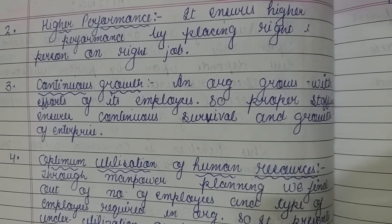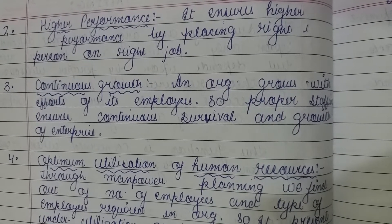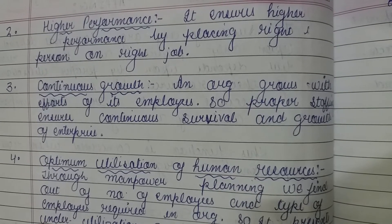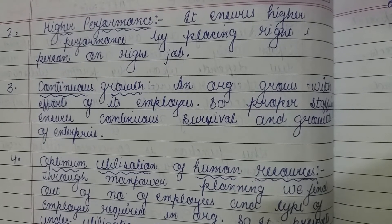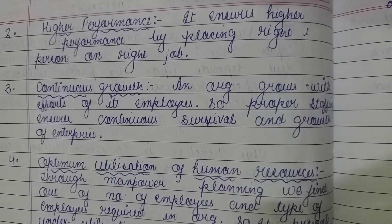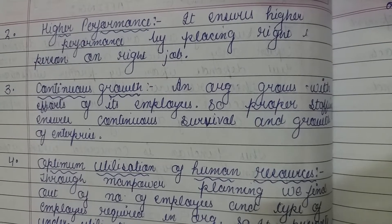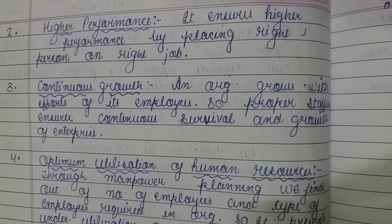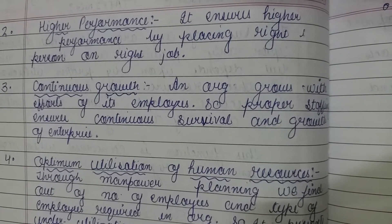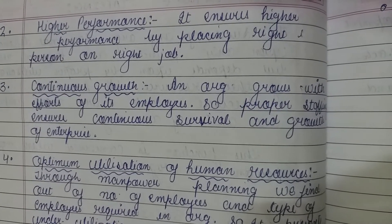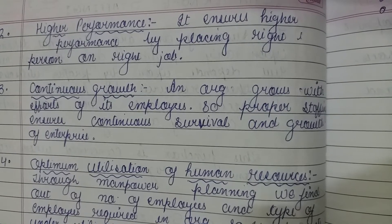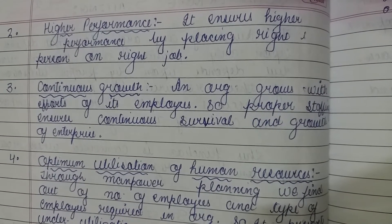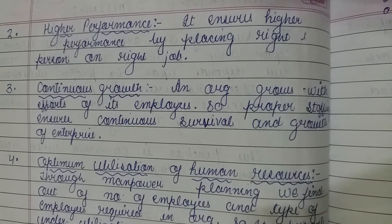Employees को जो भी place दिया जाता है, उनकी qualification के according उनको place provide कराया जाता है. So, right person at the right job — that is the second importance in staffing function, because it creates higher performance. सही person अगर सही job के लिए select किया जाएगा, तो उसकी performance level भी high होती चली जाएगी.